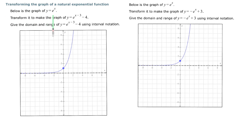Below is the graph of y equals e to the x. We're going to transform this to apply to e to the (x minus 3) minus 4. When you copy this onto your own graph paper, make sure you draw the arrows — they must match your domain and range. Let's call this example A. The transformation says take your x value and move it to the right 3 units, then take your y value and move it down 4 units.